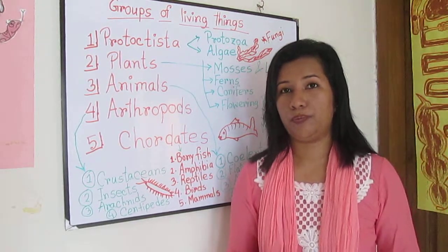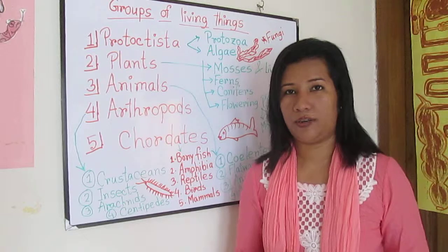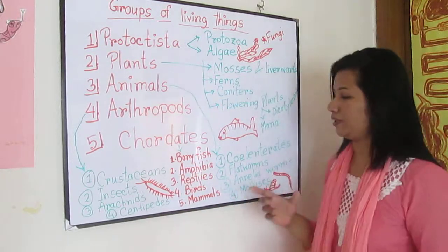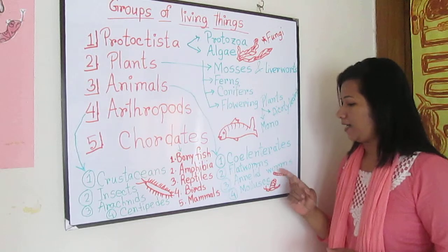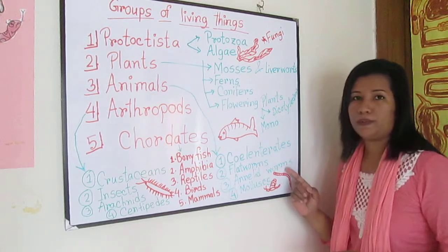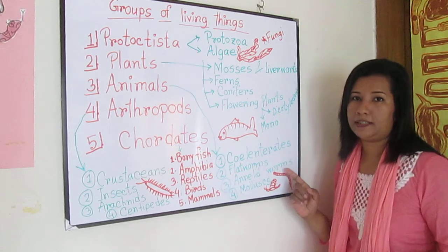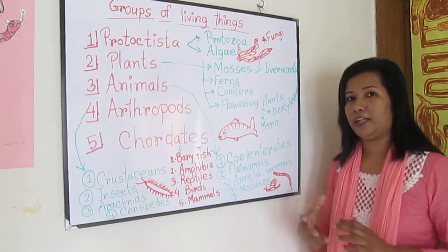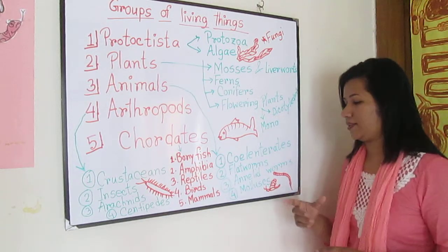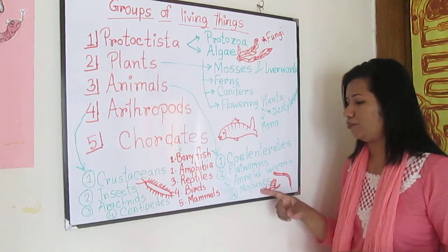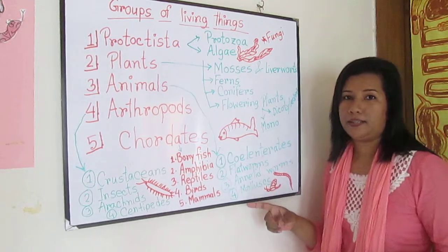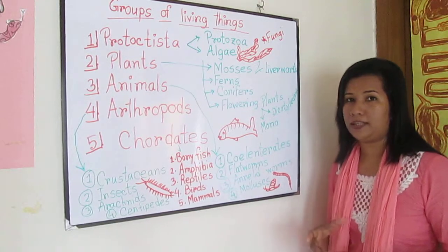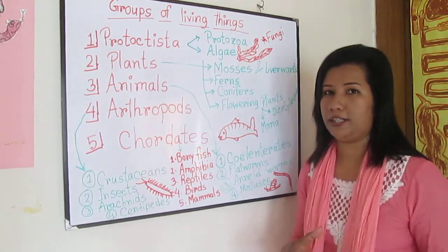Flatworms have a flat body covered with cilia. Annelid worms have a body divided into many rings. Molluscs include those with one coiled shell and two-armed creatures.